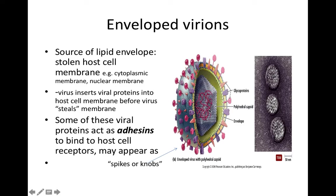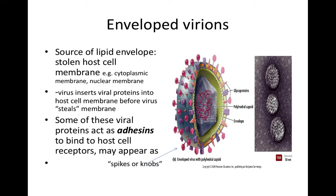Now let's discuss envelope viruses. If we take a naked virus — the capsid with genetic information inside — and wrap it in a layer of stolen host cell membrane, we get an envelope virus. This stolen host cell membrane on the outside is called the viral envelope. Based on the fluid mosaic model, it's a phospholipid bilayer with proteins inserted, with the consistency of olive oil, so it's easily damaged. The viral adhesions must be on the outermost surface, so they are inserted into the stolen host cell membrane — the envelope.